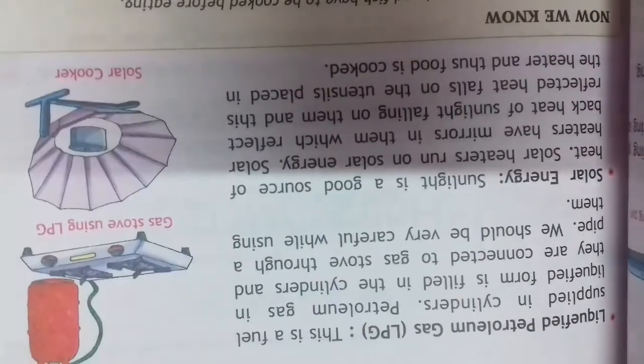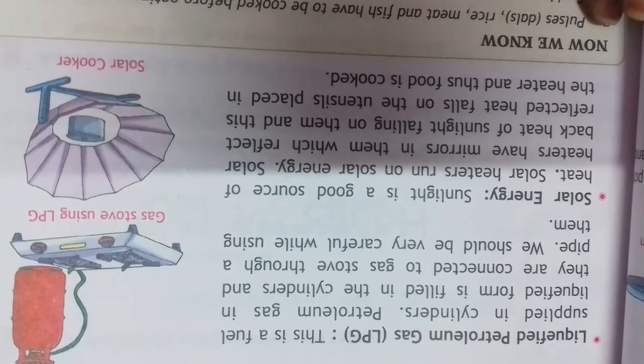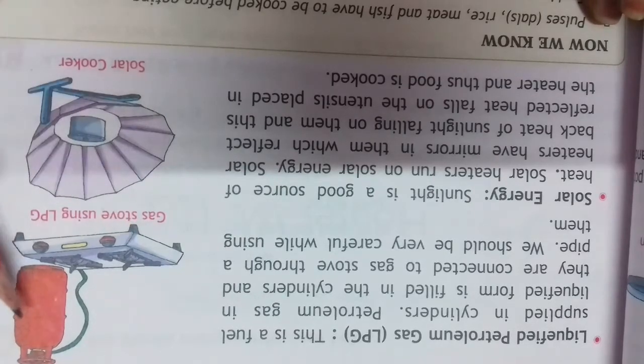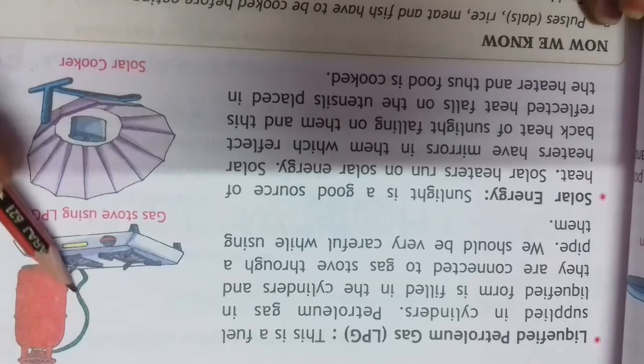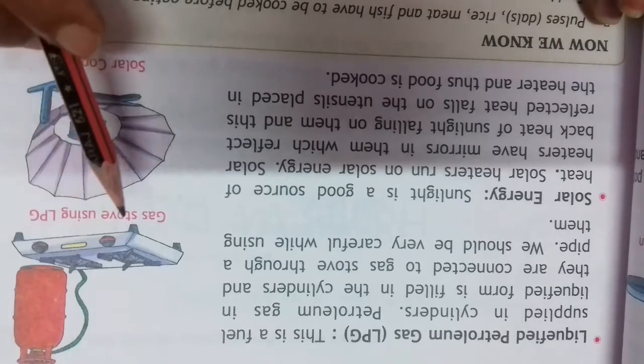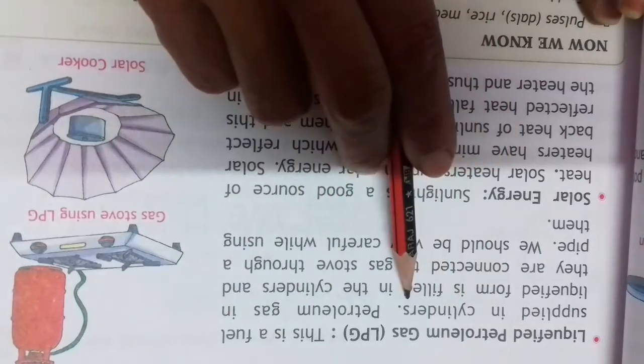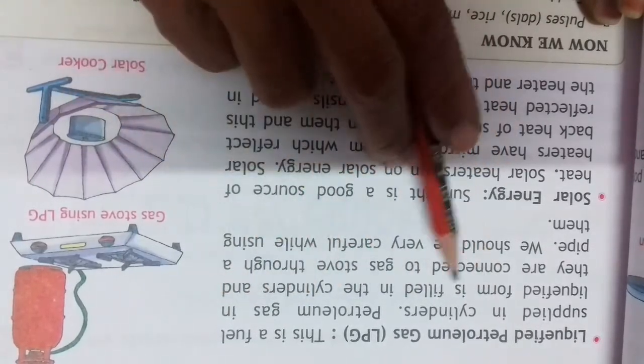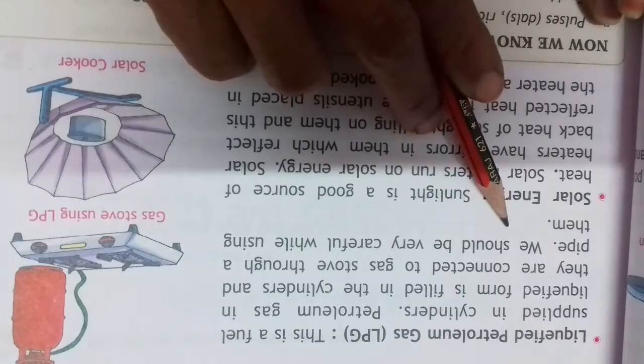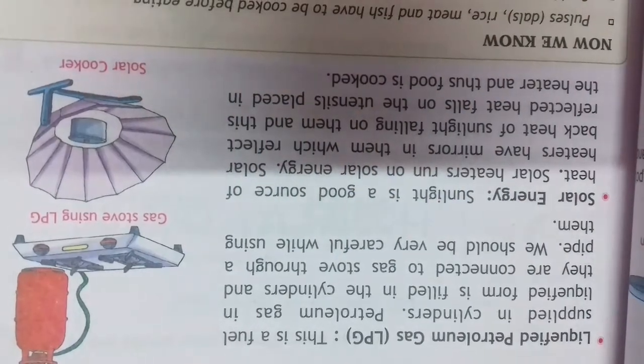Then liquid petroleum gas, which you can see in every house. This is a gas that we use to burn and this is a cylinder. The gas is filled in it with pipe connection. We use match stick to light and burn it. Liquid petroleum gas, this is a fuel supplied in cylinders. Petroleum gas in liquid form is filled in the cylinders and they are connected to gas stove through a pipe. We should be very careful while using them.